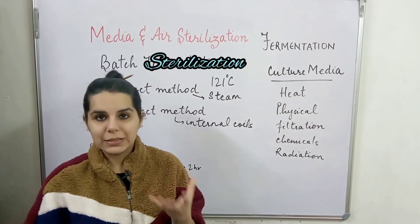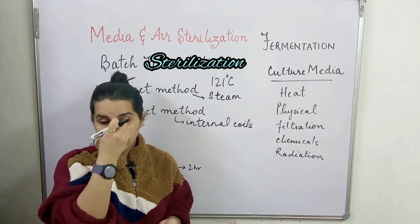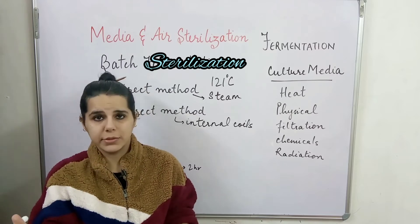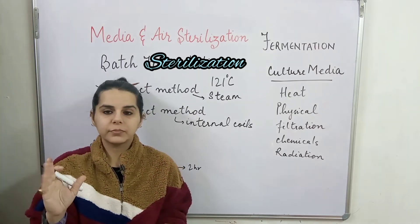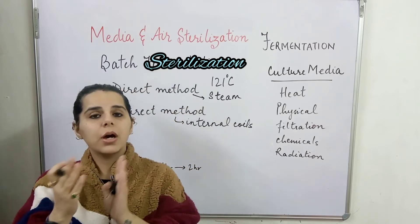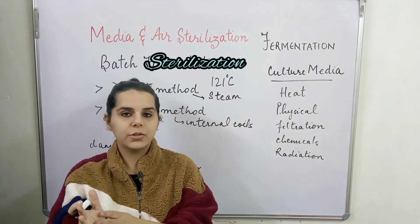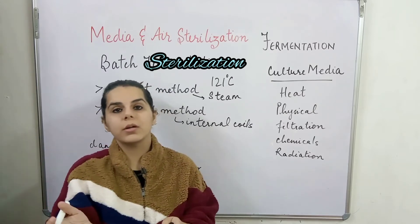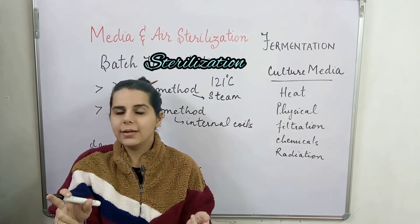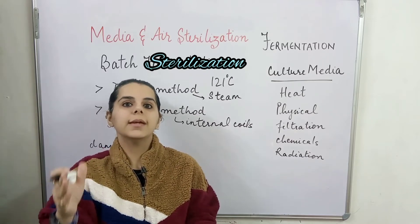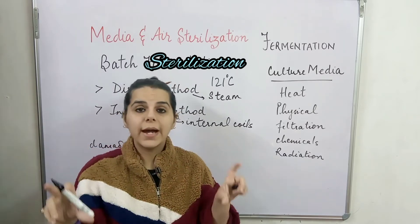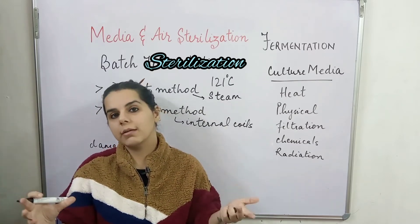There are a few disadvantages of batch sterilization. First, it is very expensive. Because it occurs in batches, it takes about two to four hours to attain the temperature of 121°C in the bioreactor. Once that temperature is attained, the actual sterilization cycle begins and continues for approximately 60 minutes. After the sterilization cycle, the coil also needs to be cooled, which takes another one to two hours.